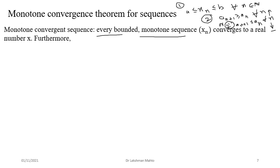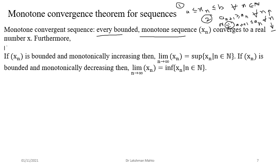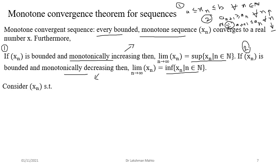More specifically: if a sequence is bounded and monotonically increasing — meaning a_{n+1} ≥ aₙ for every n — then it converges to the supremum of the range of the sequence. If it is bounded and monotonically decreasing — a_{n+1} ≤ aₙ — then it converges to the infimum of the range.